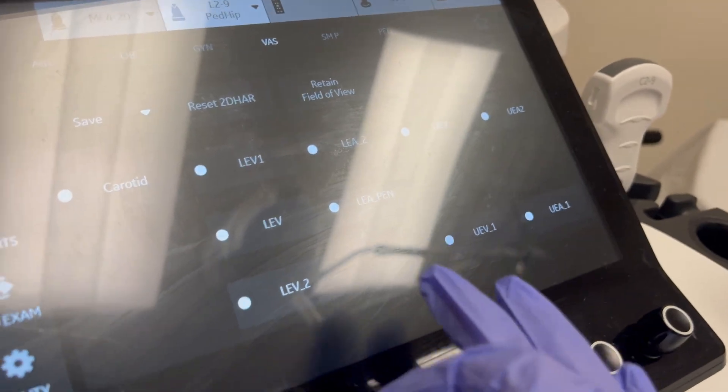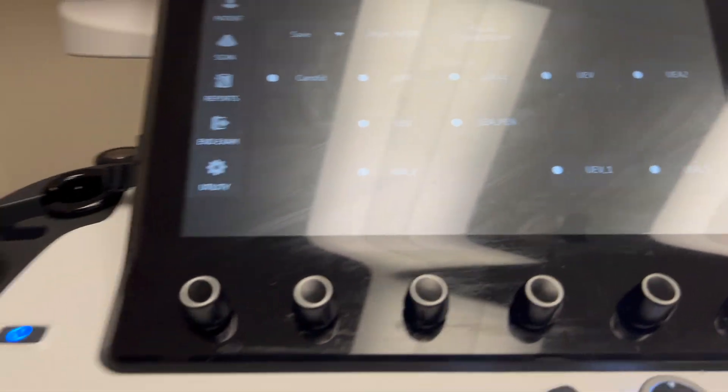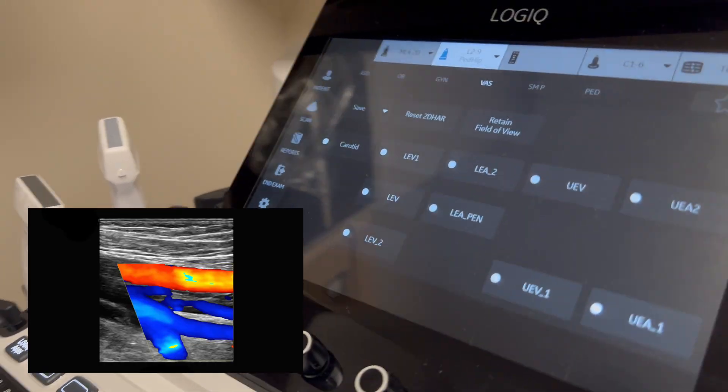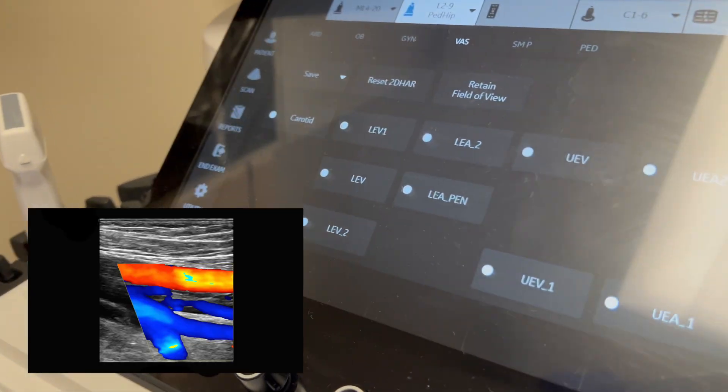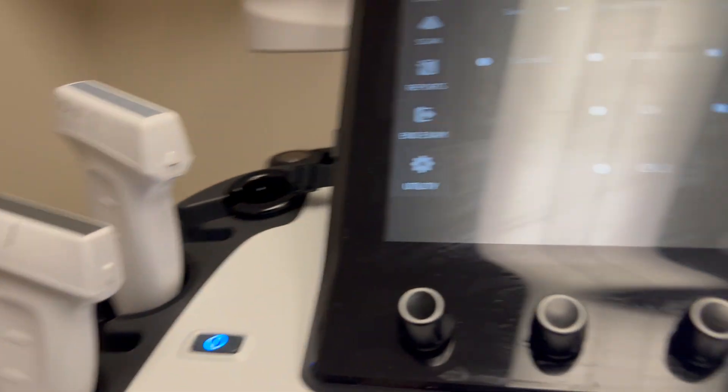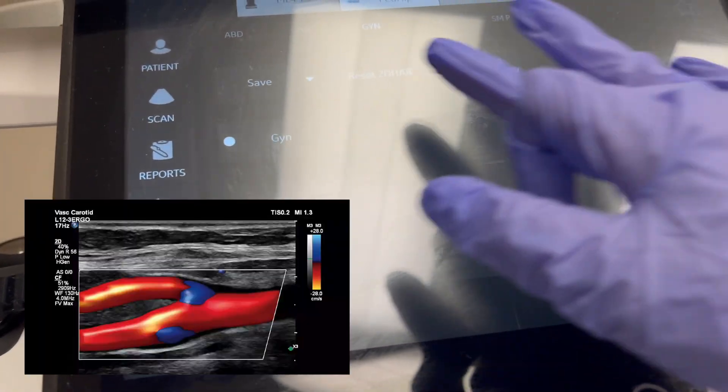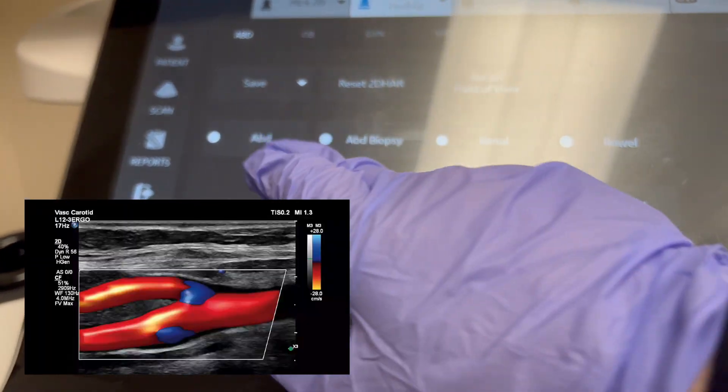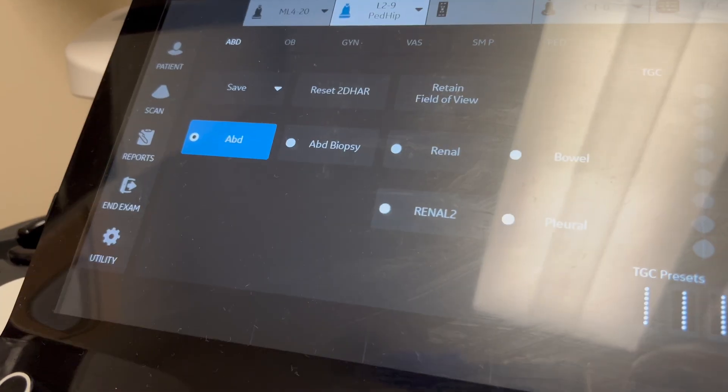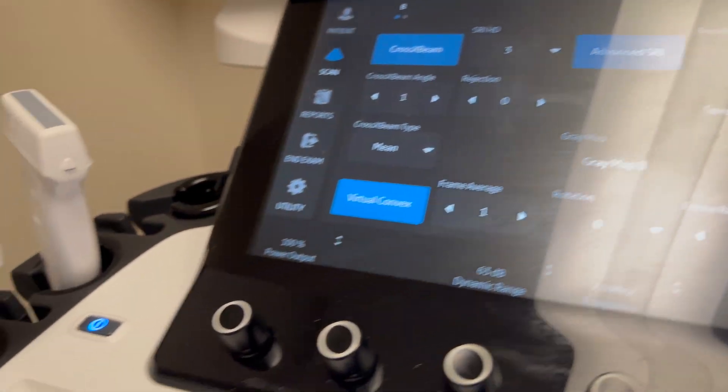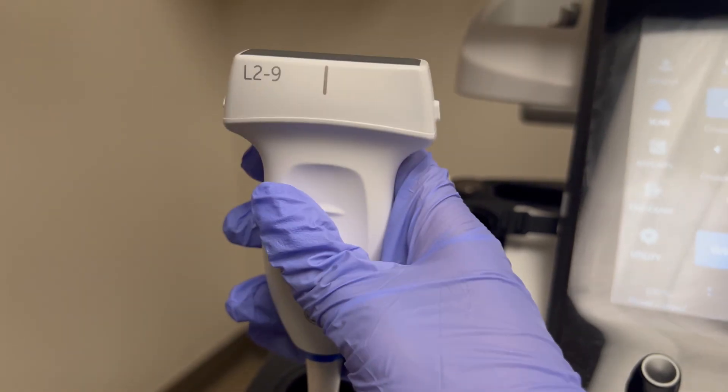You can also use it for arteries in the legs, veins in the legs, arteries and veins in the arms, and the carotid arteries in your neck. This is the probe that you will be using a majority of the times in a vascular setting.